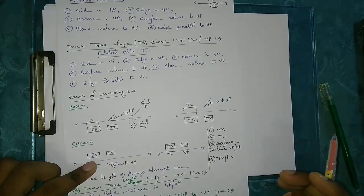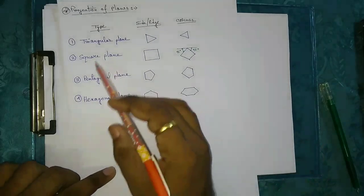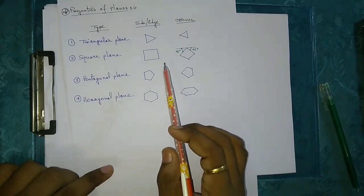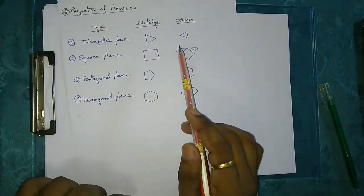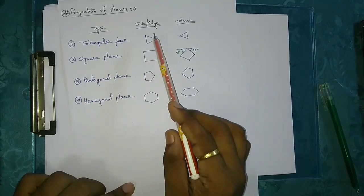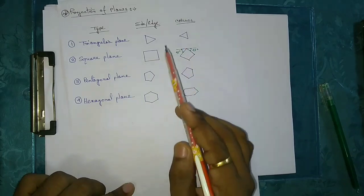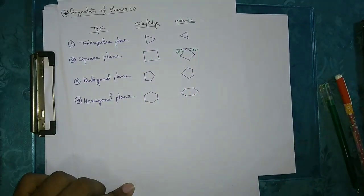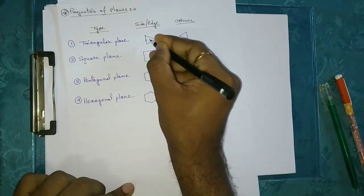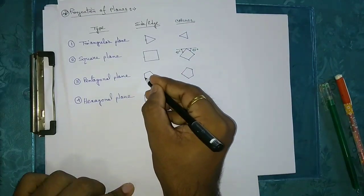For Projection of Planes, there are normally 4 types of plane shapes: triangular plane, square plane, pentagonal plane, and hexagonal plane. When a question states that a square plane has one of its edges or sides in VP or HP, or that an edge or side is parallel to VP or HP, you use the corresponding joint condition.